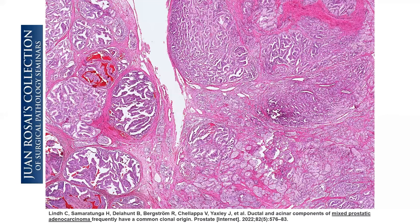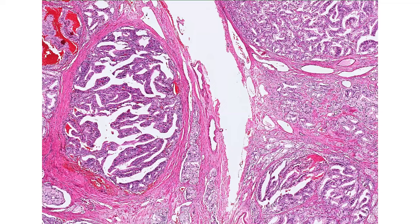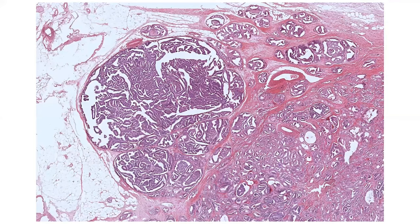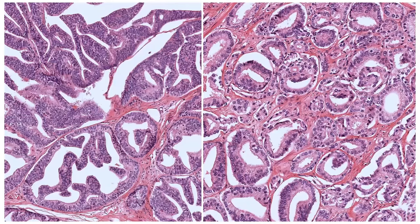Since ductal adenocarcinoma is often mixed with acinar carcinoma, do not use the diagnosis of ductal adenocarcinoma alone on a needle biopsy. In this case, toward the left you have conventional ductal adenocarcinoma morphology and toward the right characteristic acinar morphology — mixed acinar and ductal features. The characteristic ducts are seen toward the left and atypical acini toward the right. In another case, the atypical ductal adenocarcinoma component is on the left with characteristic papillae lined by pseudostratified columnar cells, while the acinar adenocarcinoma component with mostly pattern 3 glands is on the right.